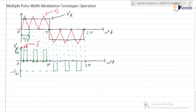Similarly, after this, for the negative half cycle, we need to turn on S3 and S4, then S3 and S4 turn off; again S3 and S4 on, then S3 and S4 off; then S3 and S4 on and S3 and S4 off. Accordingly we can get the required output voltage.